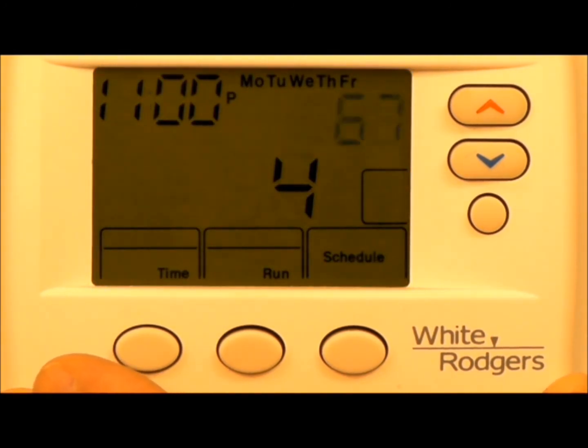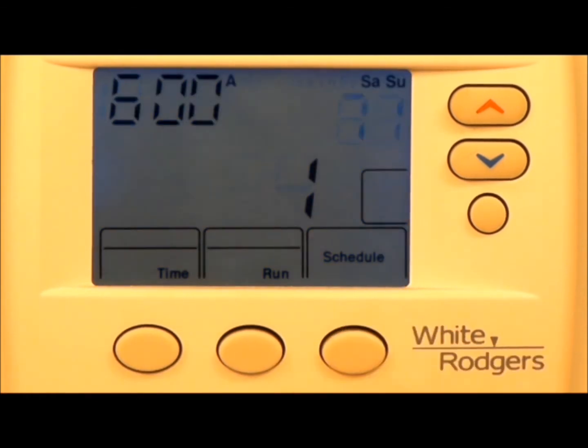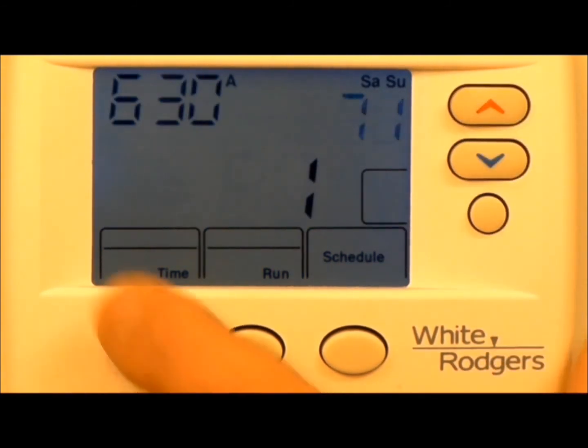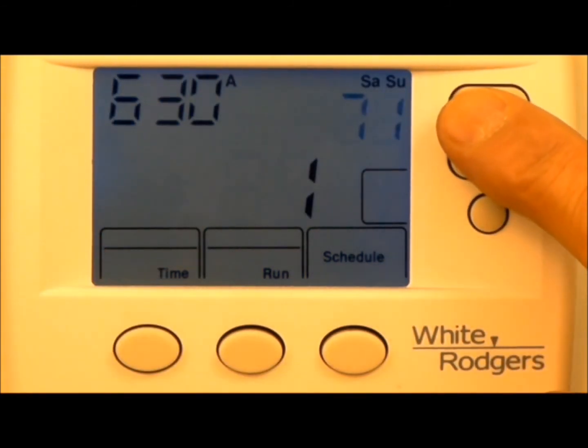When I want to schedule the weekend I'm going to hit schedule a 5th time and we will do an additional 4 time zones for the weekend. Typically on my weekends I like to get out of bed at 7. I would set my time to 6:30. 6:30 the furnace will come on, warm up the house to 71.